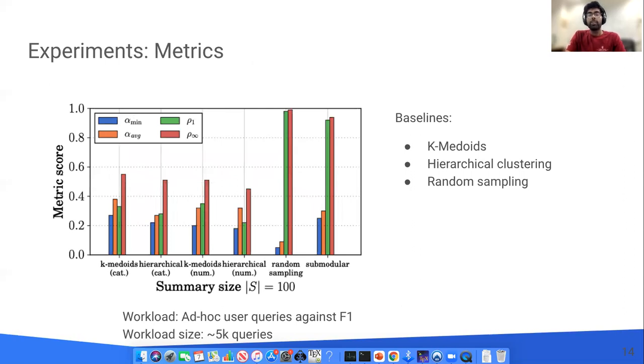The second graph above shows the metrics for coverage and representativity for all the baselines and the same input workload as on the last slide. Here, we fix the size of the summary to be 100. As the graph shows, k-medoids and hierarchical clustering have good coverage score, but poor representativity. Random sampling, on the other hand, has very high representativity, but it suffers from poor coverage. Our algorithm achieves the best of both worlds, where we get good coverage and only marginally sacrifice representativity.